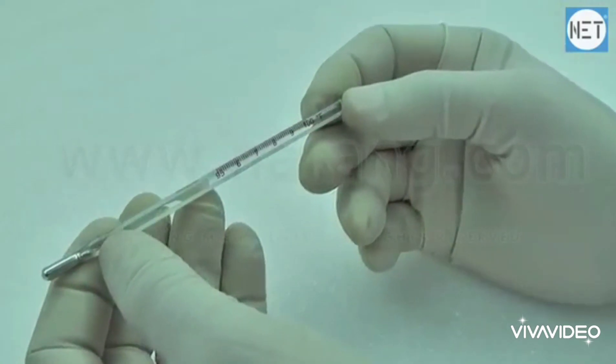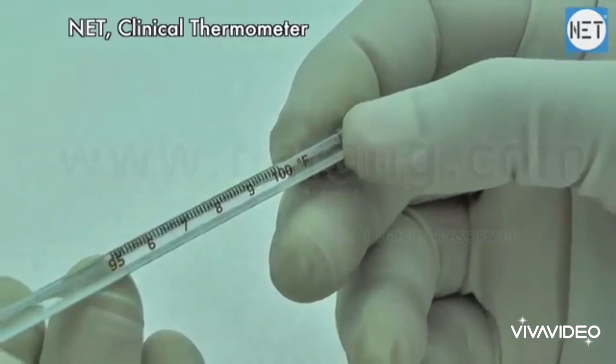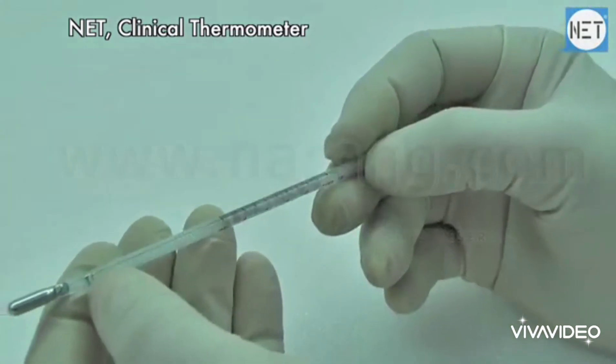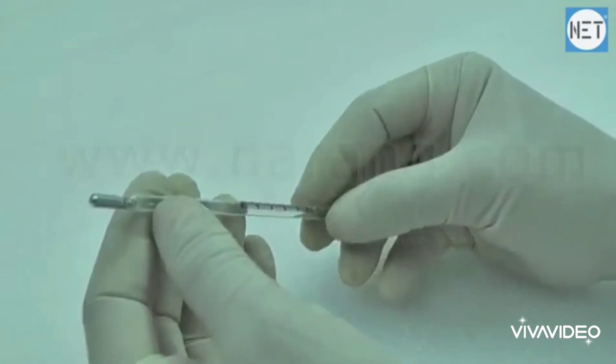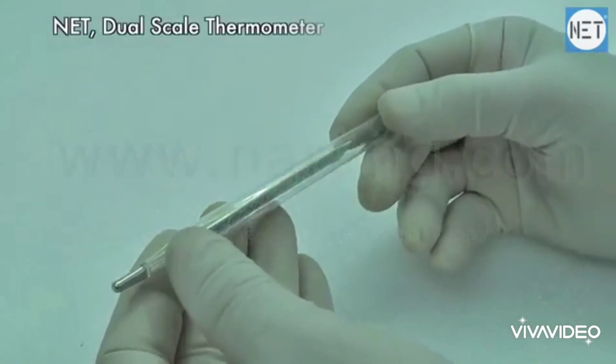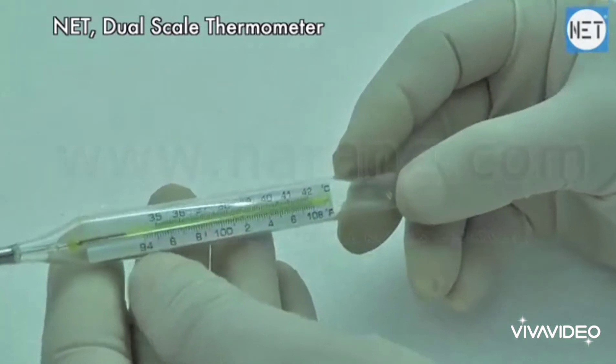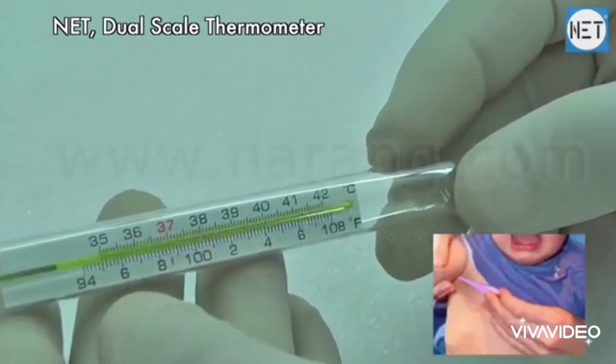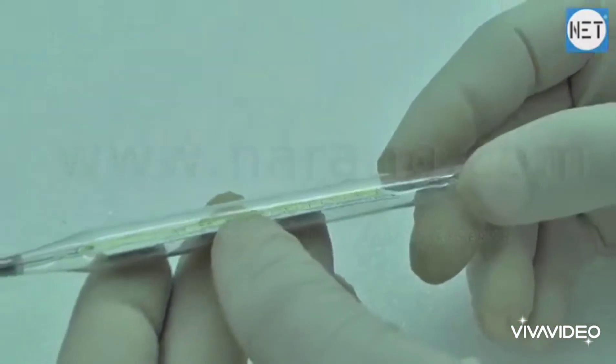When the mercury does not rise further and gets stabilized at a level, note the reading of the mark up to which the mercury has risen. Keep your eye at the horizontal line of the level of mercury. It will be the temperature of the body.